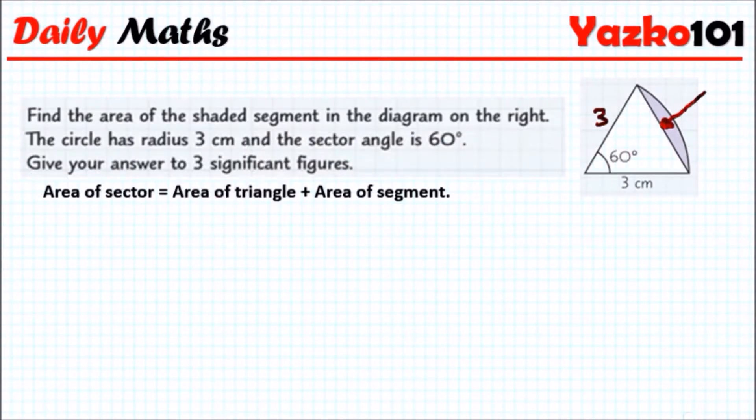The area of a sector is a fraction of the area of a circle. Since the sector is 60 degrees, the area of the sector would be 60 over 360 degrees—that's 60/360 of the whole circle—times the area of a circle, which is πr². If you work this out, remember r in this case is 3.